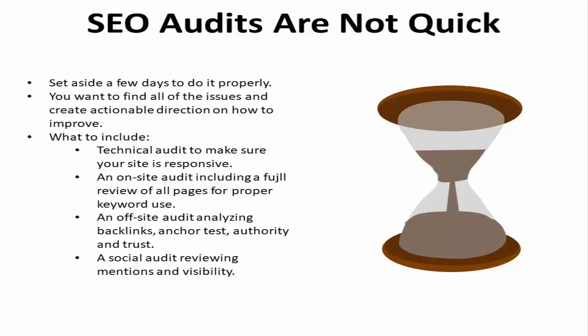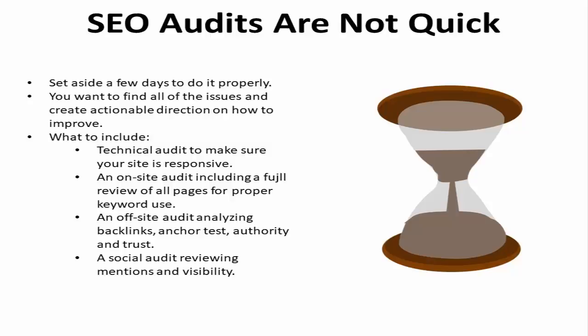Every audit should include the following minimum requirements: a technical audit to make sure your site is responsive; an on-site audit, including a full review of all pages for proper keyword use; an off-site audit analyzing backlinks, anchor text, authority, and trust; and a social audit reviewing mentions and visibility. An audit provides a detailed analysis of how your website performs in search and social media, including a list of action items with explanations and a marketing strategy, enabling you to take advantage of opportunities for improvement.